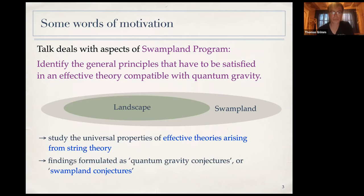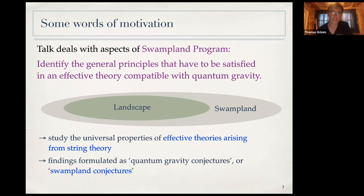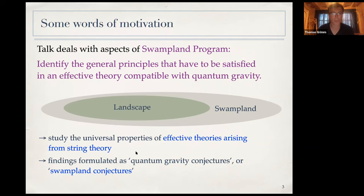How does one proceed in this program? One way is to look at the theory of quantum gravity we know — namely string theory — consider its known effective theories, check what their universal properties are, abstract from those findings, and formulate conjectures claimed to be true more generally. These conjectures are sometimes called the Swampland conjectures.